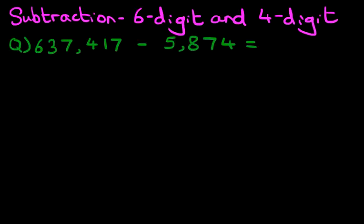Unlike subtracting six-digit numbers and thousands, this is not one you're going to be able to do in the horizontal format. So let's rewrite these numbers into the vertical format. Let's do that over here. We've got 637,417 minus 5,874.